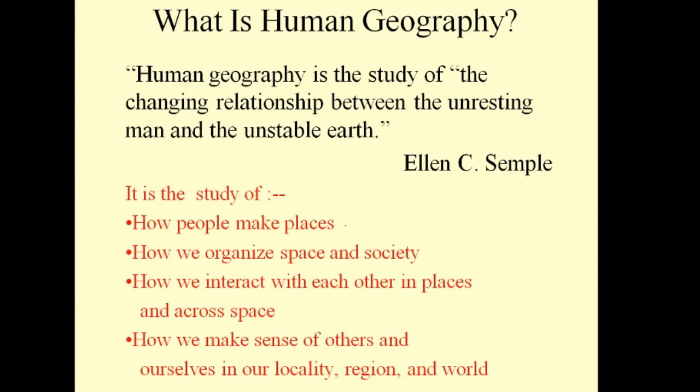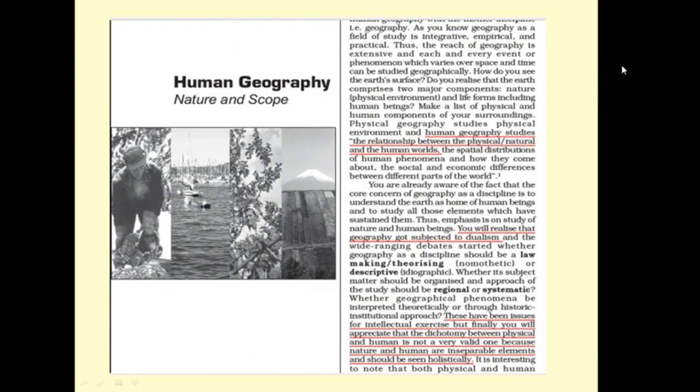In human geography, we also study about how people make places, how we organize space and society, how we interact with each other in places and across the space, and how we make sense of others and ourselves in our locality, region, and world.